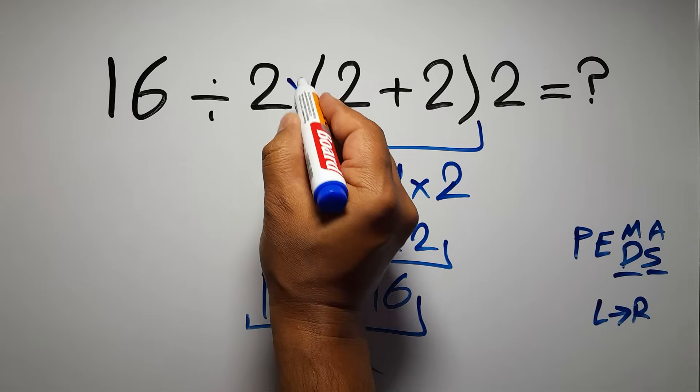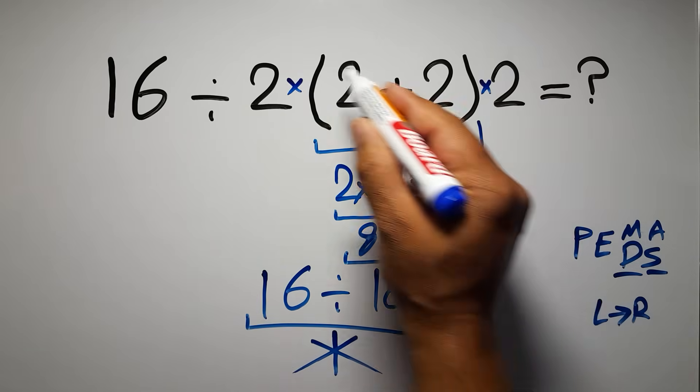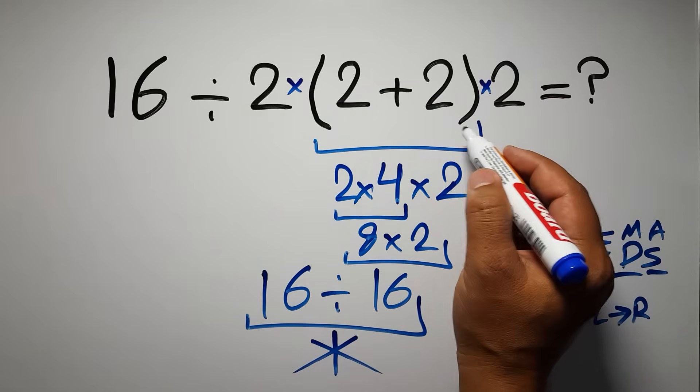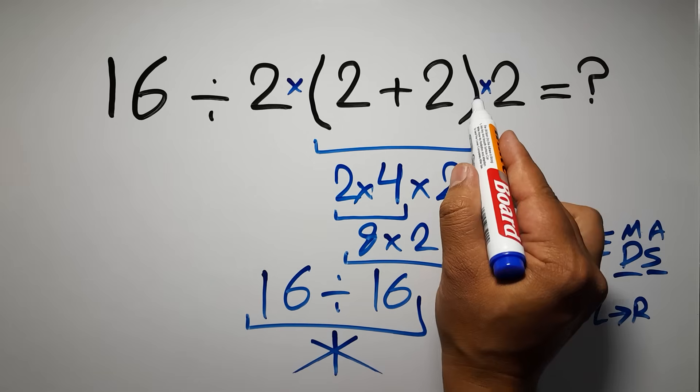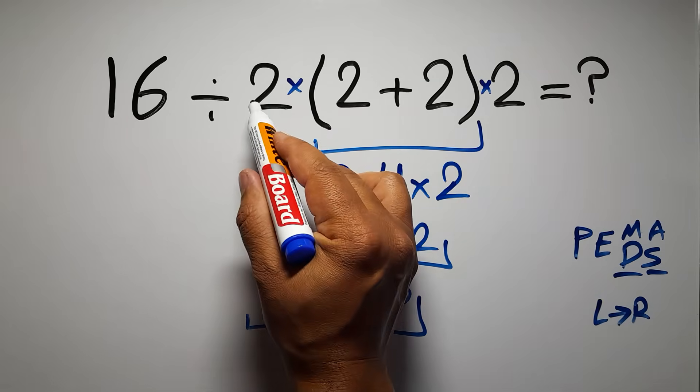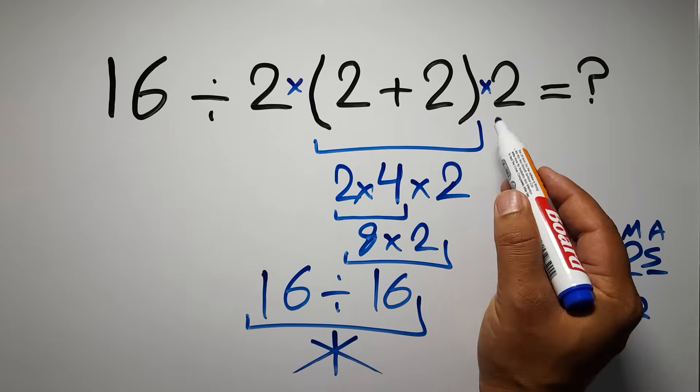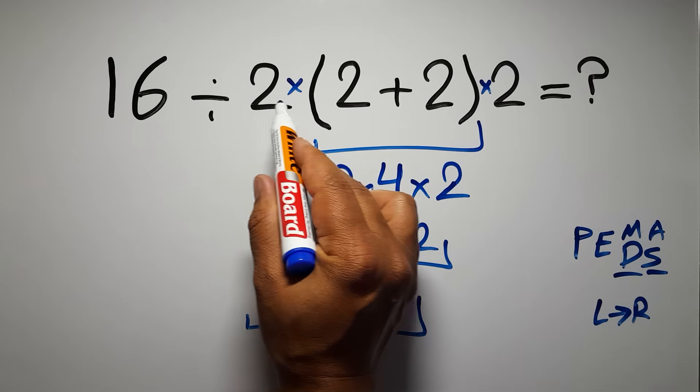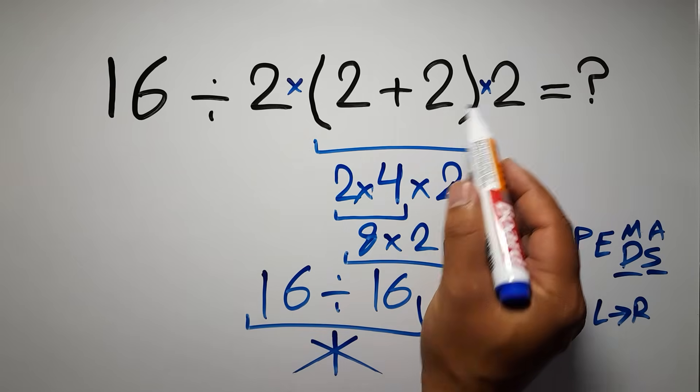two multiplications, and one parentheses. Inside this parentheses we have one addition. We also have multiplication here, because in mathematics when a number is placed next to parentheses, it means multiplication. We usually don't write the multiplication sign for brevity.